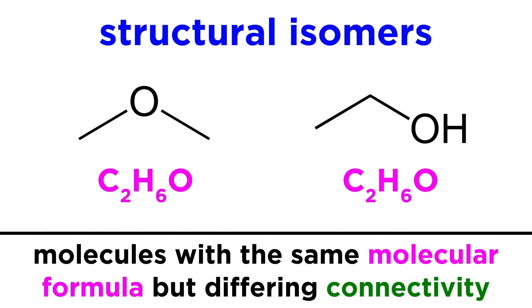The same goes for something like ethanol and dimethyl ether, which also have the same formula but the atoms are just connected differently. So sometimes structural isomers have different functional groups.